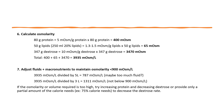Then we'll calculate the osmolarity using the table shown. The osmolarity is 3,935 milliosmoles per liter. To reach our goal of less than 900, we'll either need to increase the fluid, dilute the solution, or change the composition of the PPN. You'll see that when we increase the fluid to 5 liters, the osmolarity falls below 900, but 5 liters may be too much fluid for the patient. If we only give the patient 3 liters, the osmolarity will be too high.